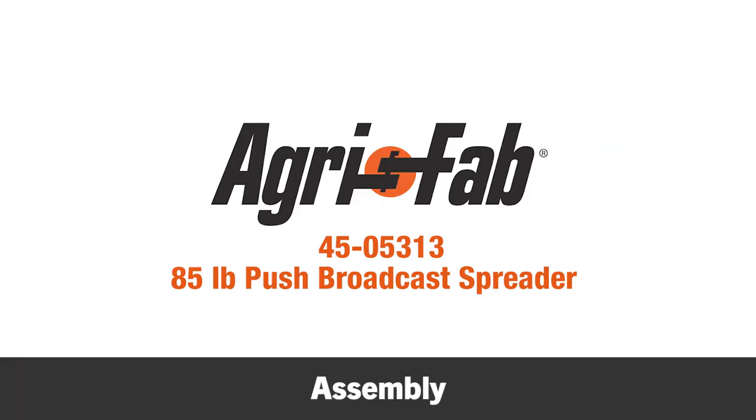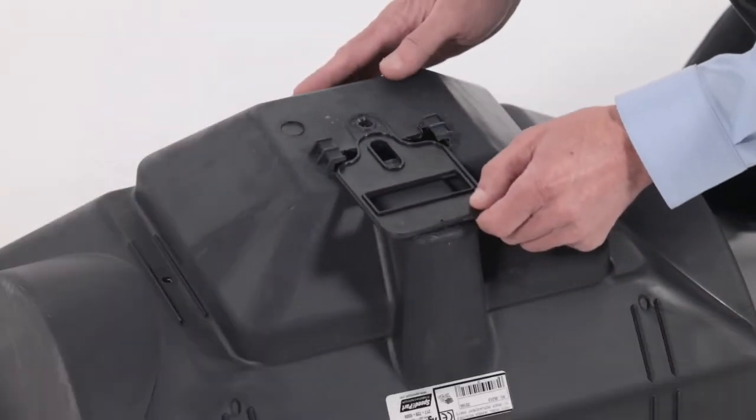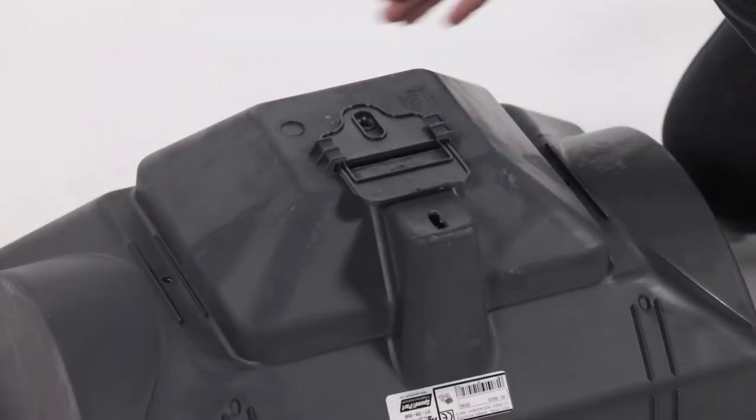This segment demonstrates how to assemble your new 85-pound AgriFab Push Broadcast Spreader. Begin by turning the hopper, Part T, upside down. Then slide in the flow plate, Part H, as shown.